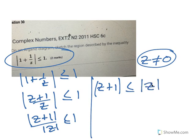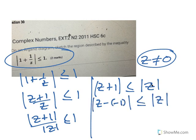So what does that actually mean? That means |z - (-1)|, so it means the distance from -1 is less than or equal to the distance z is from 0.